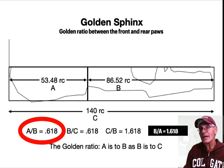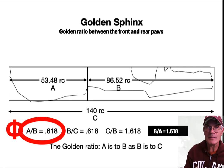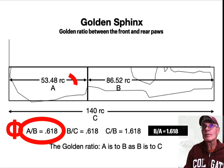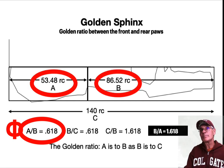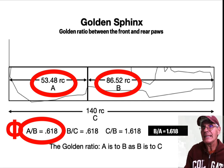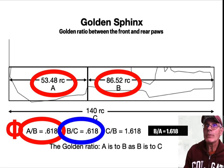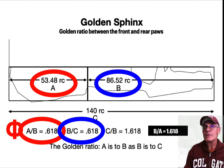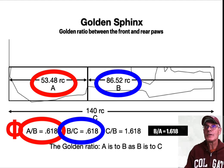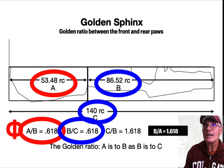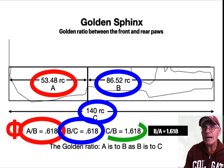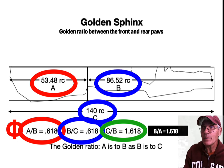0.618 is Phi, often represented by the Greek symbol φ. So you have a over b: if you take 53.48 royal cubits to the front of the back paw and 86.52 to the front of the front paw, you get 0.618 — the Phi proportion. For b over c, the distance between the front of the back paw compared with the whole length of the Sphinx also equals 0.618. So again, we have Phi.